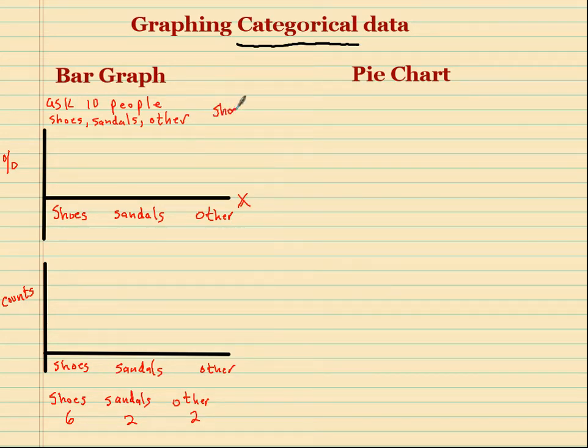So let's go ahead and do it as a percentage of the whole. So the way we do this is shoes. Okay, we had 6 out of the 10, which is just 0.6. Or you could say 60%.